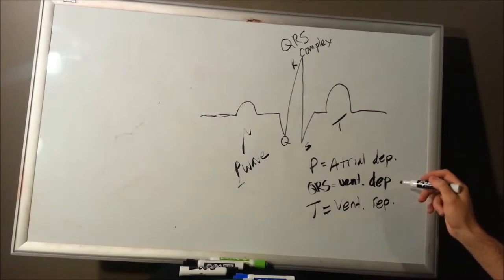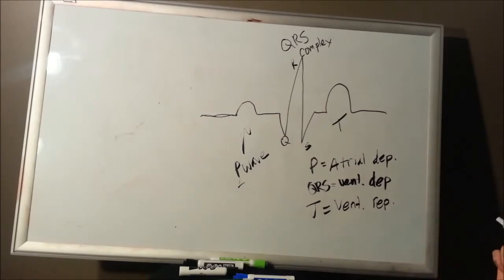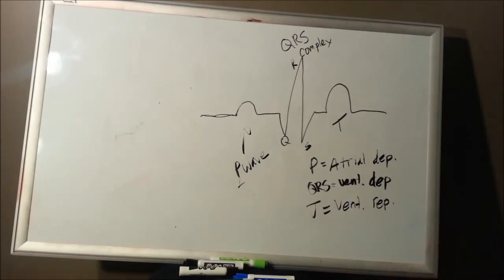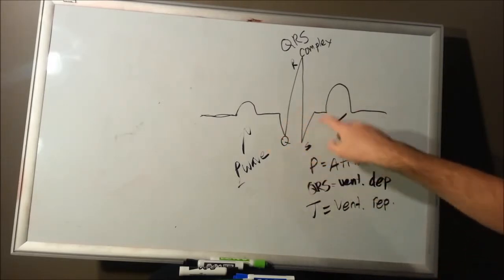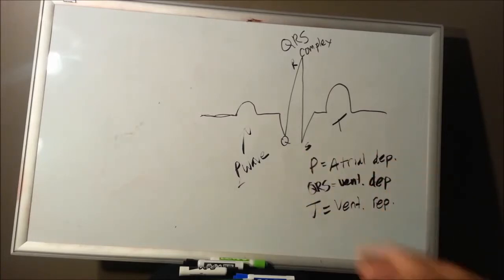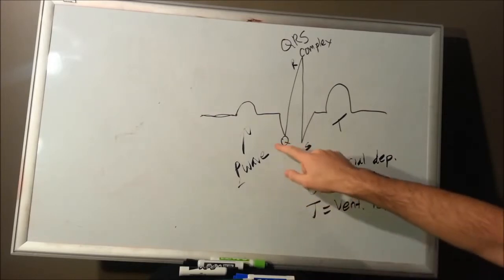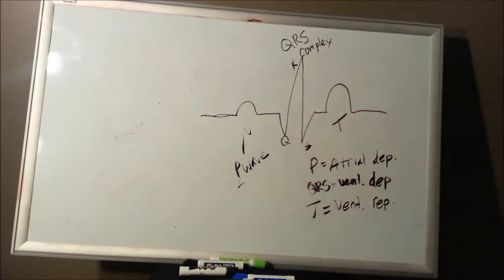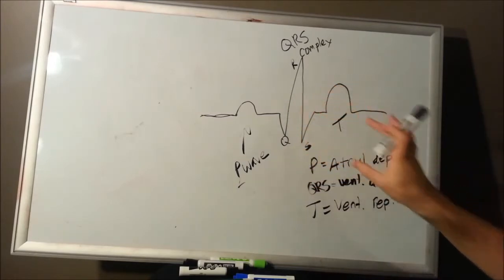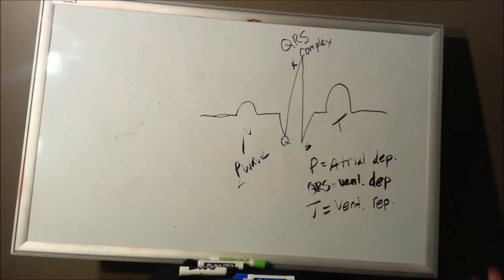We see atrial depolarization, ventricular depolarization, and ventricular repolarization — but what about atrial repolarization? Atrial repolarization does occur somewhere in this time, but your ventricles have a lot more muscle mass, and the more muscle mass you have, the bigger the EKG tracing will show. The atria just don't have as much, so atrial repolarization gets lost within the cycle — the ventricles predominate, and it gets fuzzy on the EKG tracing.